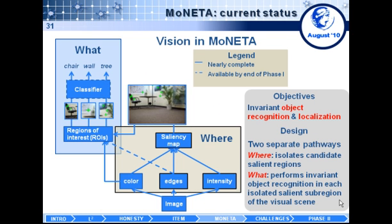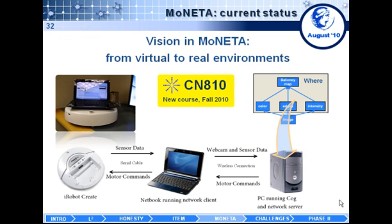For Moneta's visual system, the objective is to build a system capable of invariant object recognition and localization, with a 'where' system that finds salient image patches and a 'what' system that classifies objects in those patches. We are currently focused on the virtual environment, but we would like to apply this to more challenging environments soon — including a robotic class in fall 2010 where we have robots in the lab and plan to port the visual system to a robot.